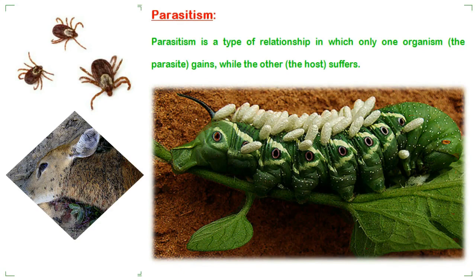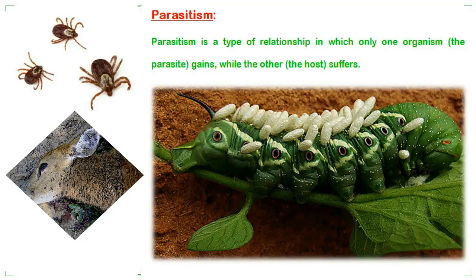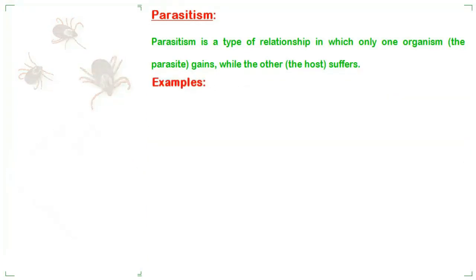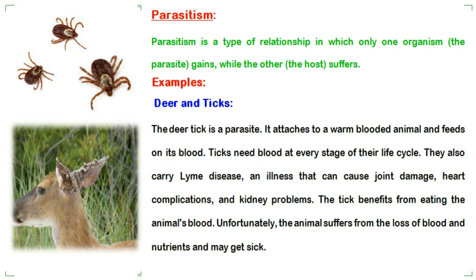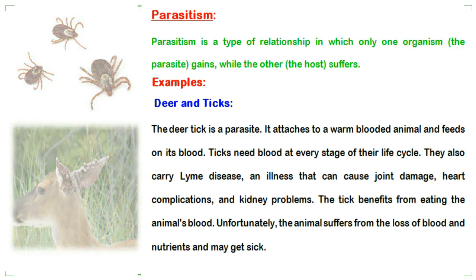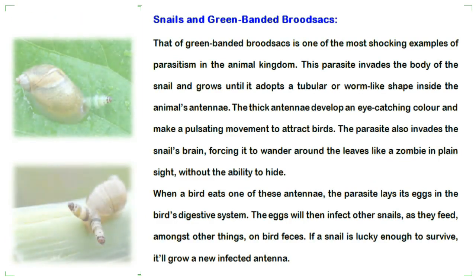Parasitism is a type of relationship in which only one organism — the parasite — gains, while the other — the host — suffers. For example, the deer tick is a parasite that attaches to a warm-blooded animal and feeds on its blood. Ticks need blood at every stage of their life cycle and also carry Lyme disease, an illness that can cause joint damage, heart complications, and kidney problems. The tick benefits from eating the animal's blood, while the animal suffers from loss of blood and nutrients and may get sick.